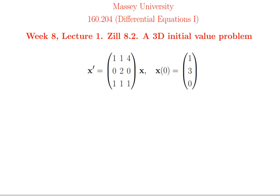Last time we looked at an equation with a 2 by 2 matrix, so two dependent variables x1 and x2. This time we'll do a three-dimensional initial value problem, so we'll have x1, x2 and x3 all bundled up together in that vector x. We're going to look for solutions of the form x equals e to the λt times some constant vector k. That would be a solution if λ is an eigenvalue of the coefficient matrix and k is an eigenvector. So we need to find the eigenvalues and eigenvectors — that's what will take up the bulk of this example.